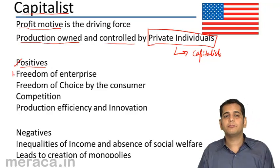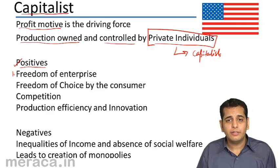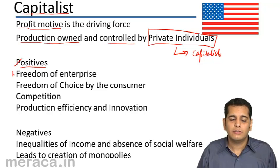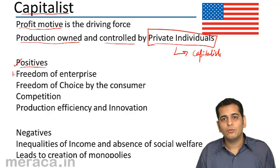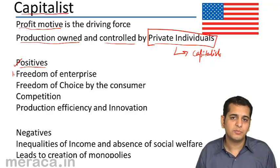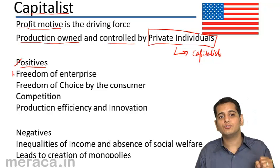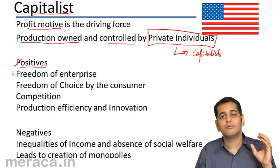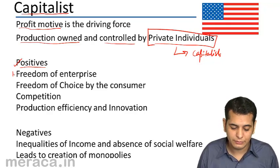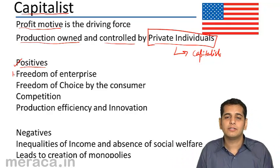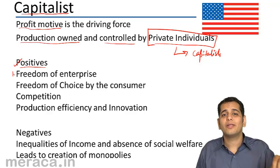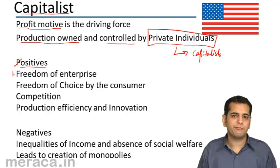First, freedom of enterprise. In this type of economy, the owners, the capitalists, the entrepreneurs are free to do whatever business they want — free to choose whatever goods they want to produce, free to render whatever services they want to render. They have a freedom of enterprise; there is nobody to restrict them.